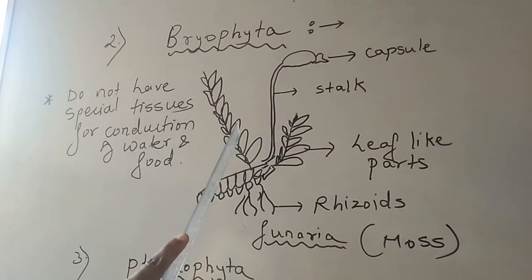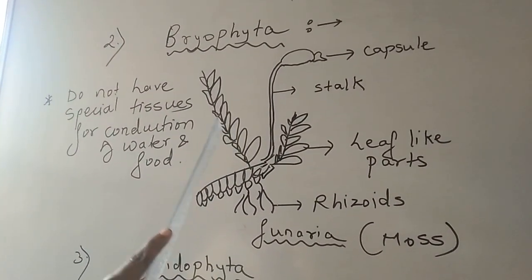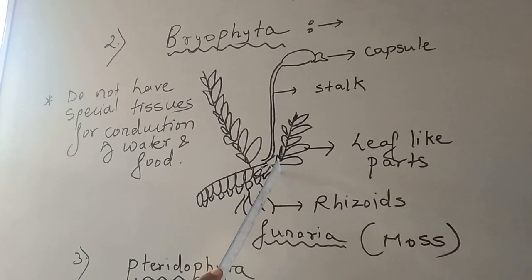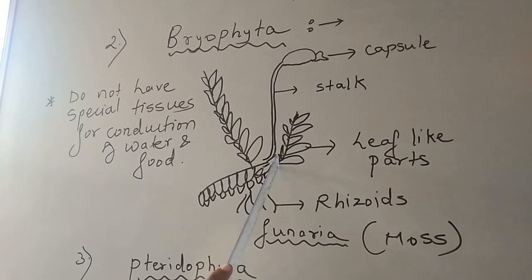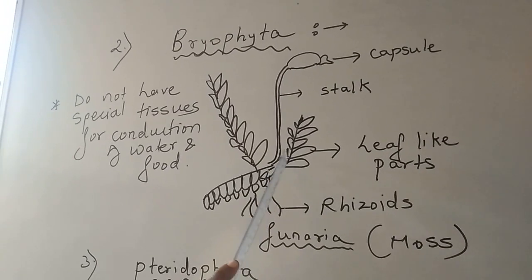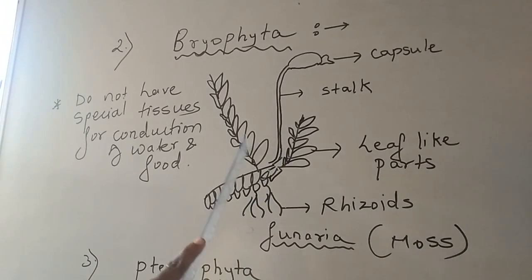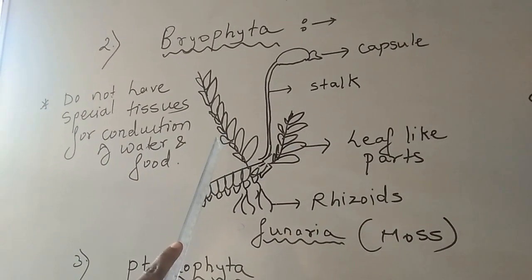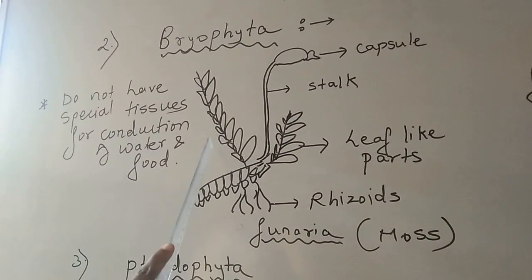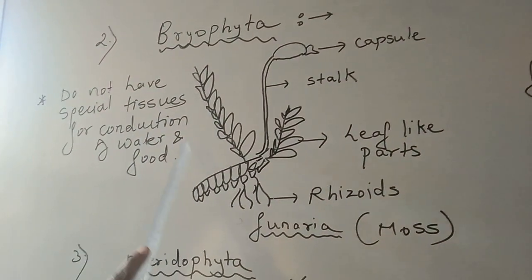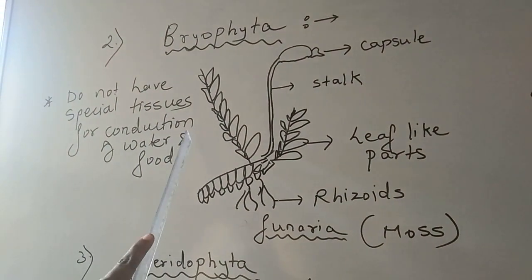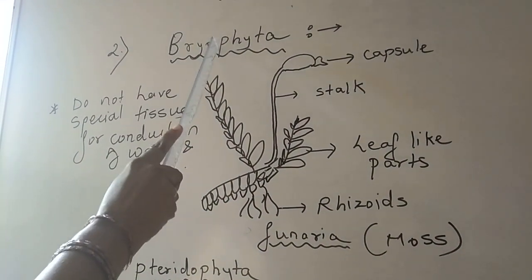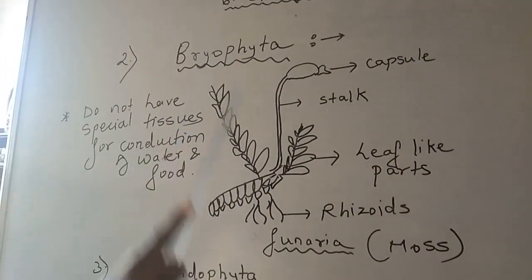Second point: these plants are multicellular and autotrophic. Third: they reproduce by spore formation. Fourth: they do not have special tissues for conduction of water and food. These are the general characteristics of Bryophyta.